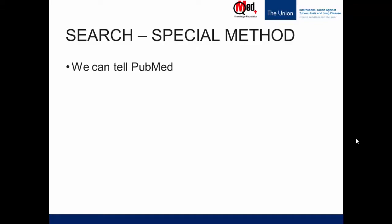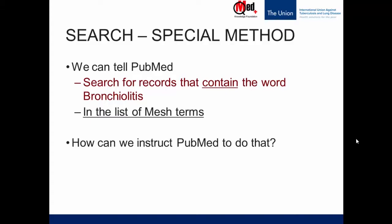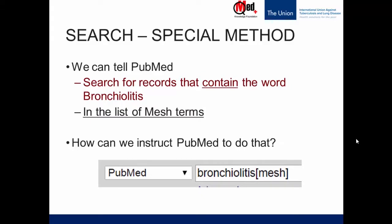Similarly, in PubMed there's a special method of tagging your search term without just putting in a keyword. What we are really doing is telling PubMed: search for records that contain the word 'bronchiolitis' — which it will do anyway — but additionally, it must contain that word in the list of MeSH terms. Because if the word 'bronchiolitis' is in the list of MeSH terms, the article is definitely about bronchiolitis, even if the word does not appear in the title. We instruct PubMed to do this by typing the word 'mesh' after 'bronchiolitis' in square brackets. The square bracket [mesh] tag is the equivalent of the hashtag used in Facebook or Twitter.